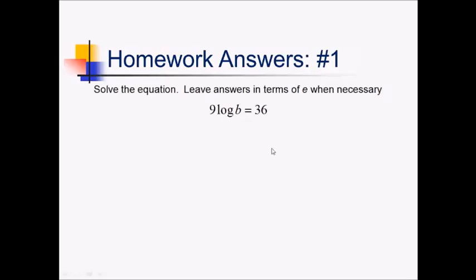For this problem, we're trying to solve the logarithmic equation 9 log b equals 36. We'll start by isolating the logarithmic expression. So dividing both sides by 9, we have log base 10 of b equals 4. And since this is base 10, I'm just going to raise 10 to both sides of this equation. That cancels out the log on the left side.